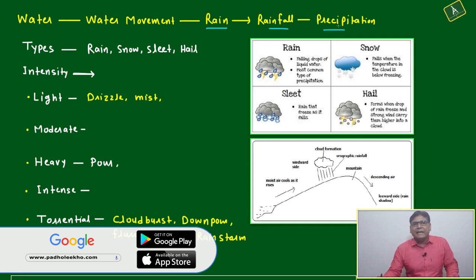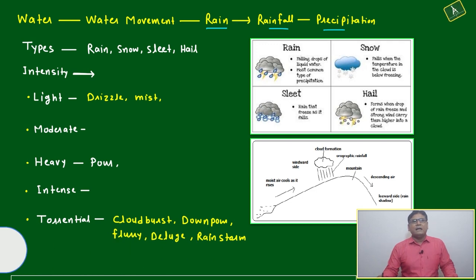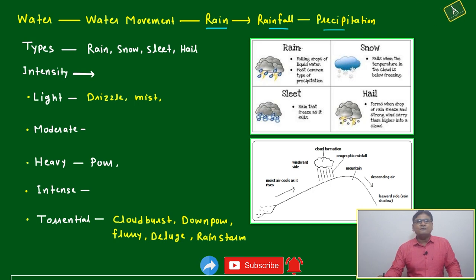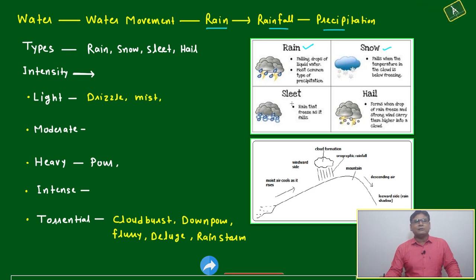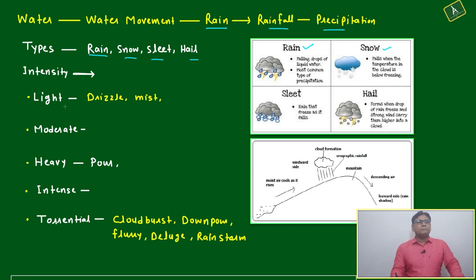Precipitation is also a chemical name — precipitation means conversion from liquid to solid. Once the rainfall is converting into precipitation type, then these four types of rain will come: one is normal rain, another will be snow, another will be hail, and another will be sleet. These four types will be there.